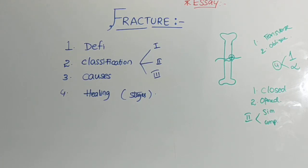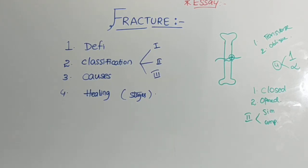Next, the fourth type: single and multiple fractures. By the name itself you can guess the elaboration. A single fracture means there is one fracture either in the same bone or in a different bone. A multiple fracture is where you can see multiple fractures within the same bone or in different bones. By this we are done with our classifications.